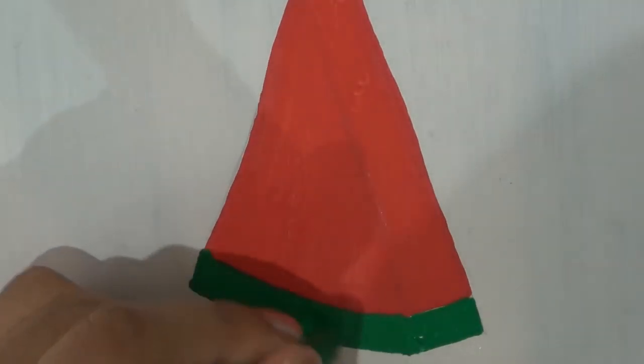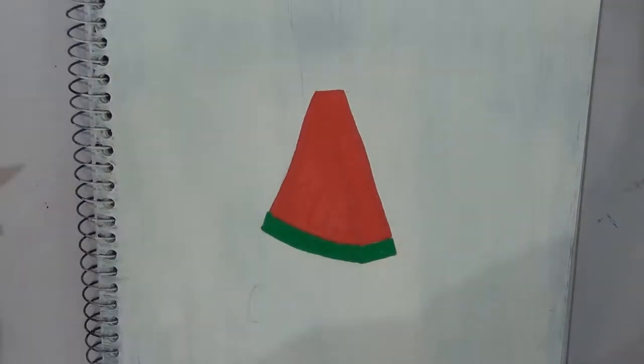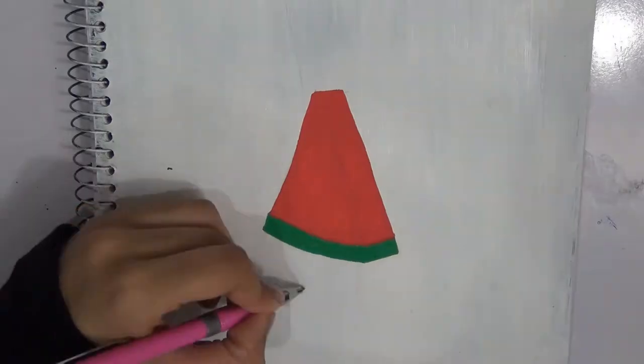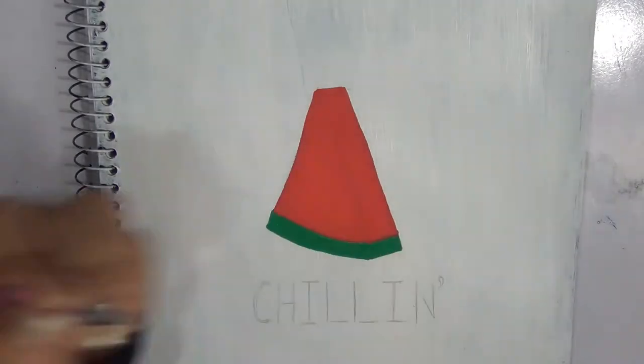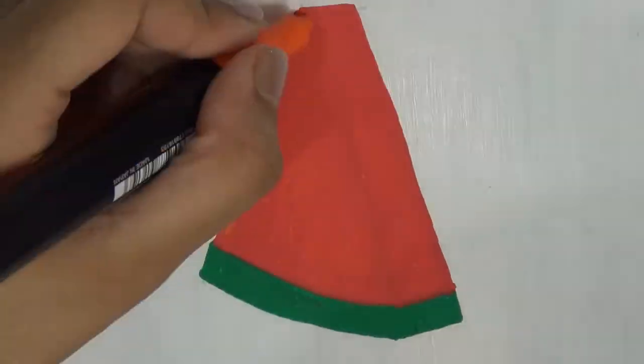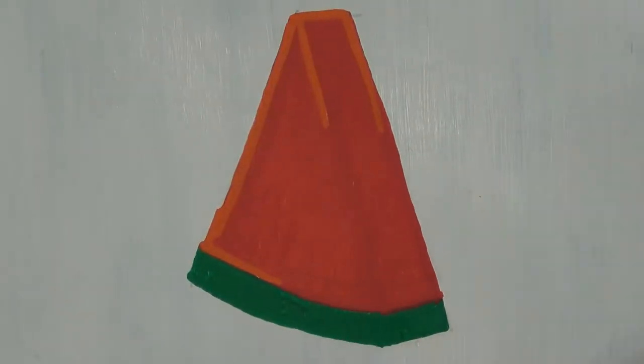You can use acrylic paint, or if you want, you can cover your book with paper and use markers. Or if you want, you can even use colored pencils, but you just have to cover it over with tape so that it doesn't get spoiled or faded.